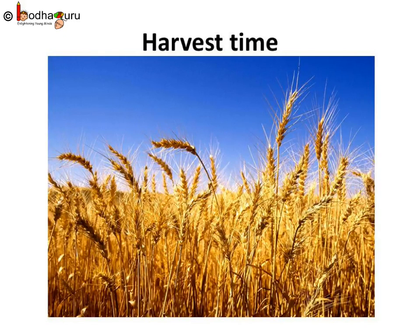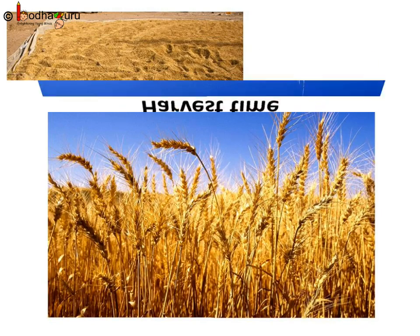Farmers work very hard for many months to grow a good crop. Then comes the time for harvesting. The cutting of crop after it is mature is called harvesting. Cereal crops like paddy, wheat, barley etc. take around 4 months to mature.